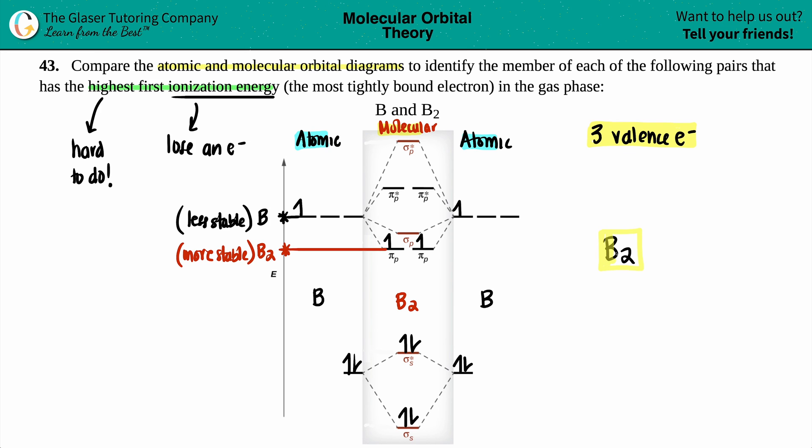So the highest first ionization energy would be B2. And that is it for this one. What'd you think? Let's color it in pretty, beautiful. And that is it.